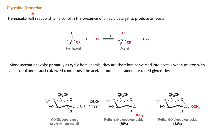Next is glycoside formation. We know that a hemiacetal reacts with alcohol in the presence of acid to give an acetal. Our glucopyranose also exists in hemiacetal form, so when we treat it with alcohol in the presence of acid, it gives methyl alpha-D-glucopyranoside. This is called methyl glycoside and it comes in the category of O-glycoside.